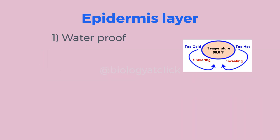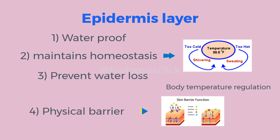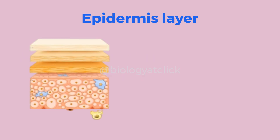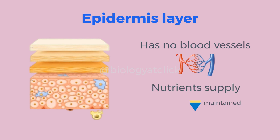The epidermis is the outermost layer that is waterproof, maintains homeostasis of the body, prevents water loss, and acts as a barrier to prevent entry of harmful chemicals and infectious agents. An important point to remember is that the epidermal layer does not have any blood supply, as it has no blood vessels. All nutrients are transferred through the dermis layer.